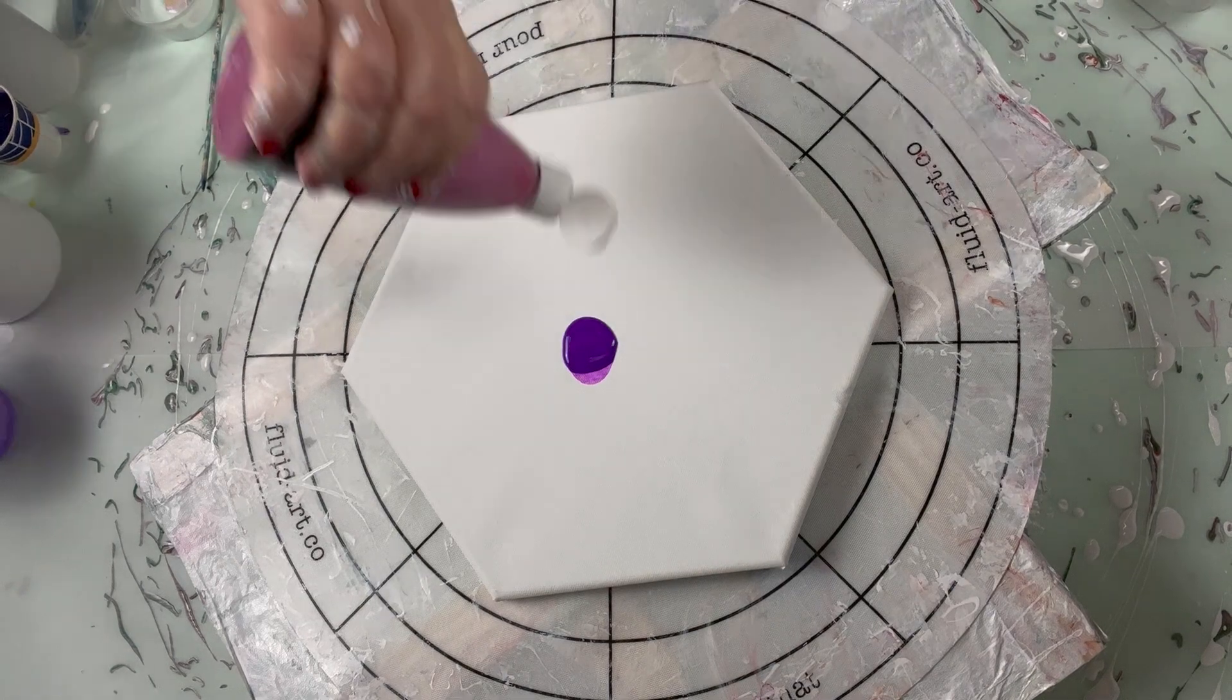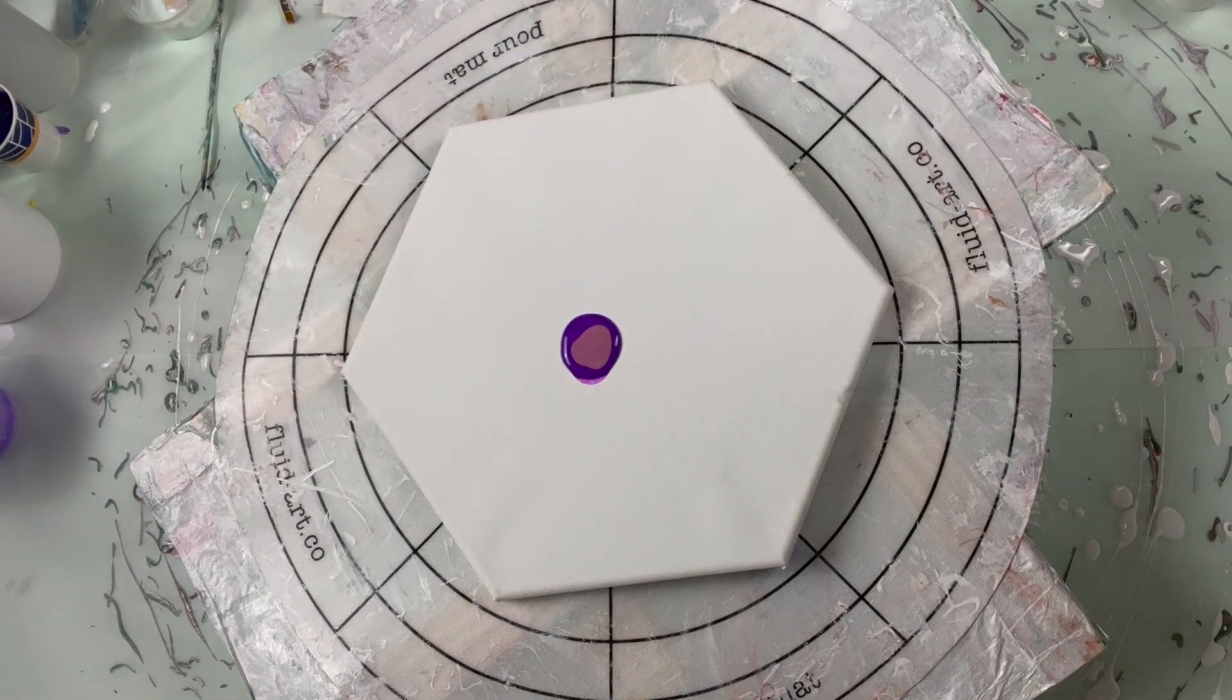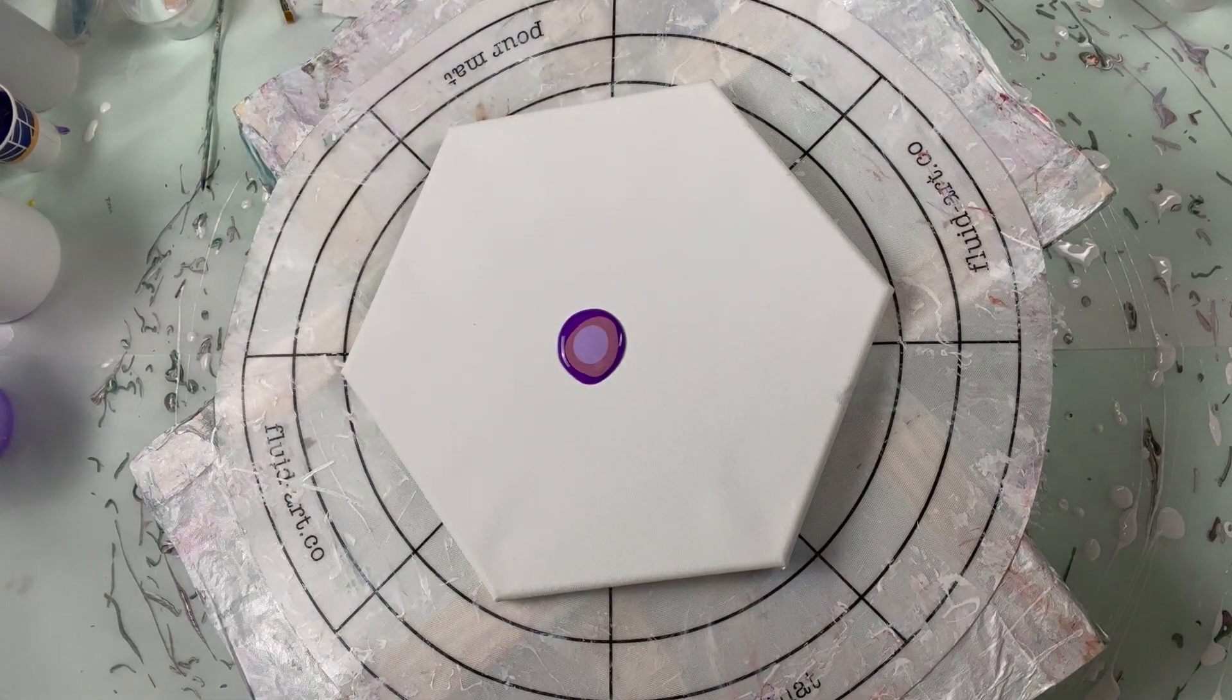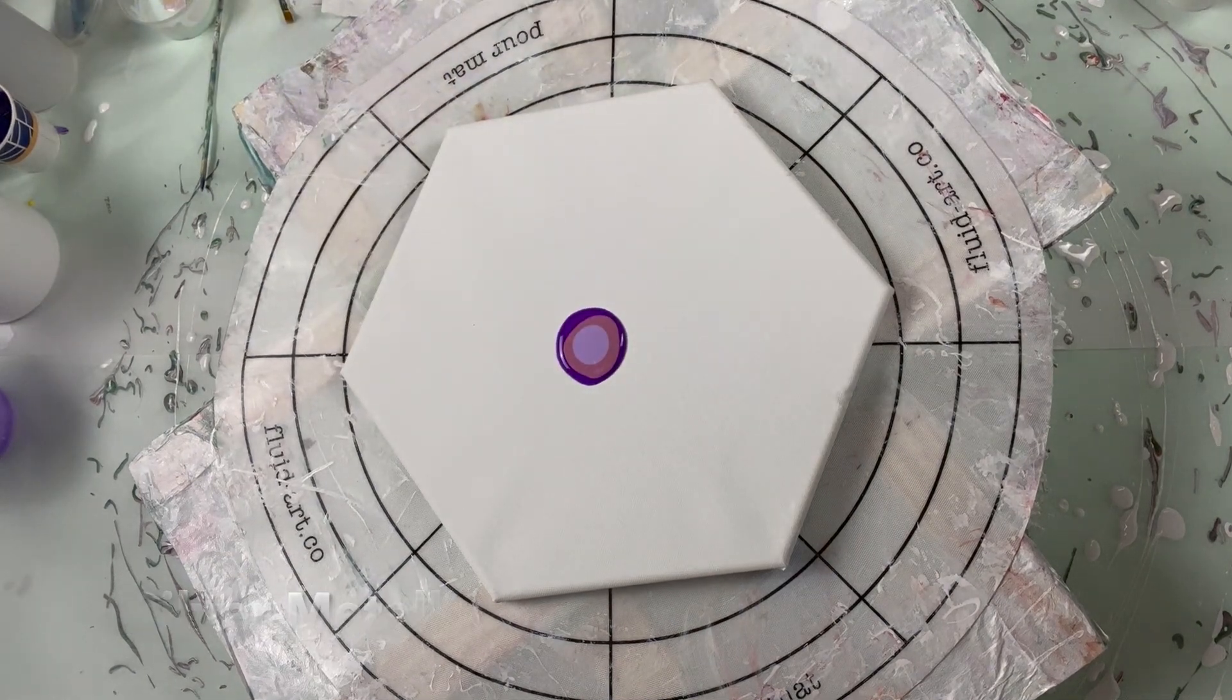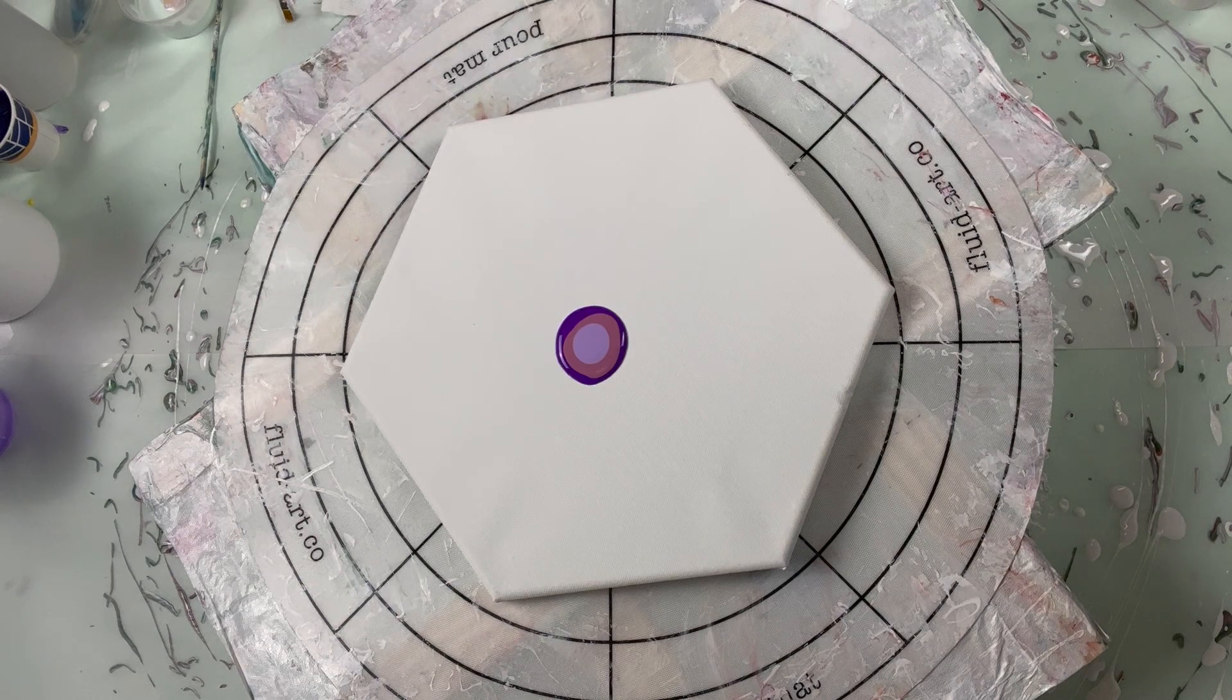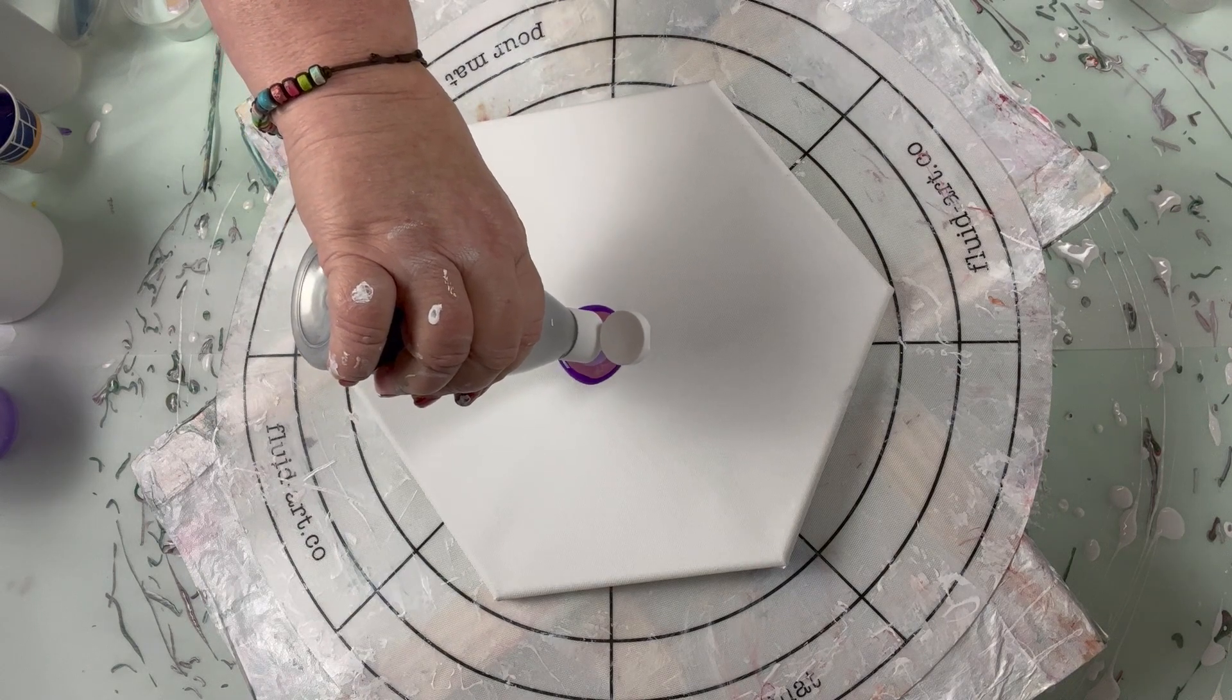Then we're going to do the mauve. Please don't squirt like that. And then we're going to do the lilac. I want a nice round puddle. And then we're going to do the metallic silver. I didn't open it. Hold on. I shook it, but I didn't open it. There we go. And there is the silver.